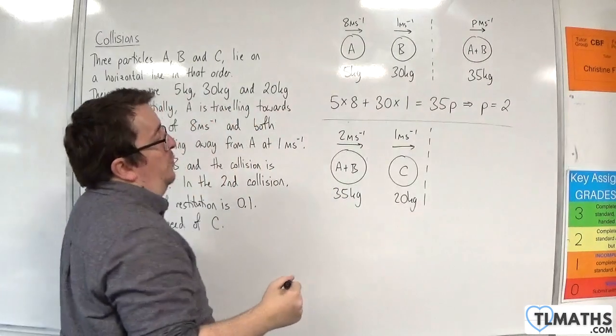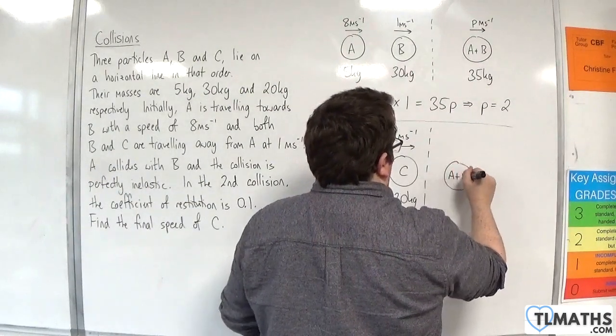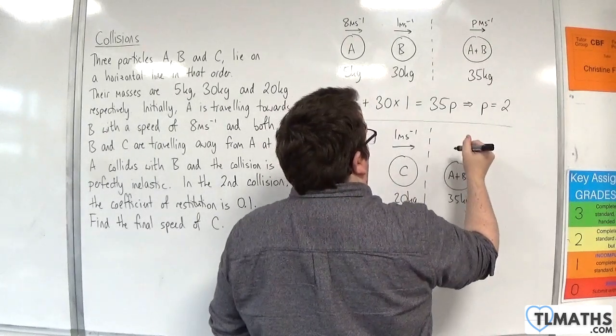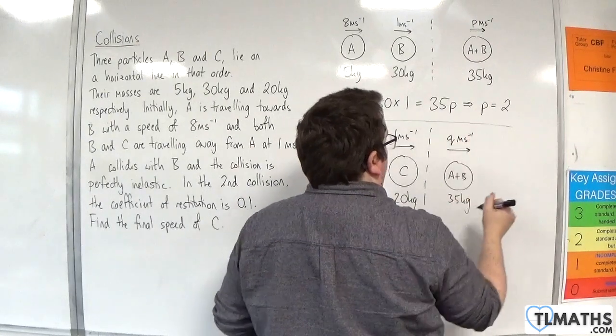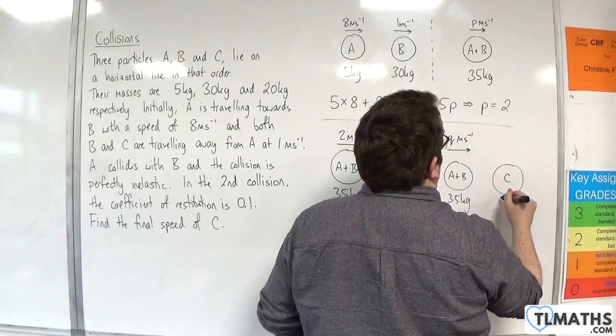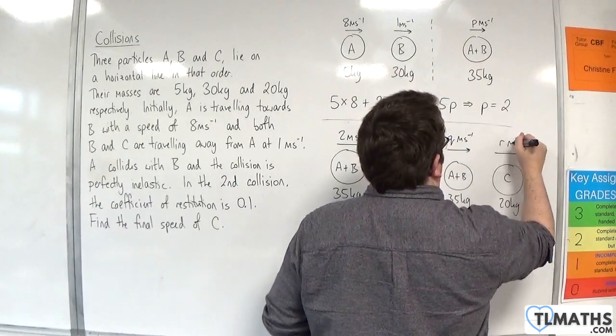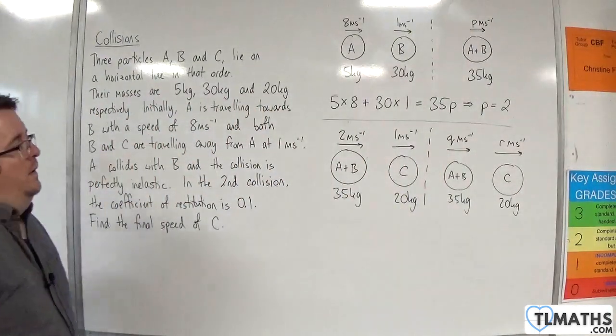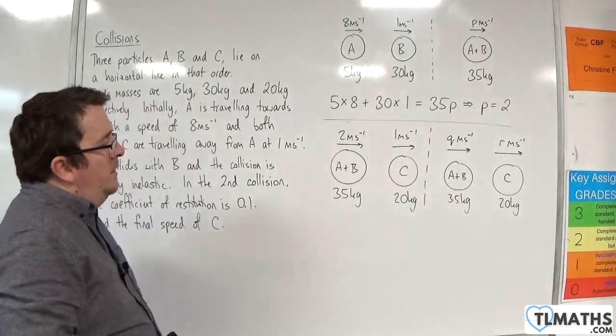That's before. Then afterwards, we have A and B of 35 kilos, and we'll call this Q metres per second to the right, and C of 20 kilos traveling at R metres per second. So here's my before, here's my after.